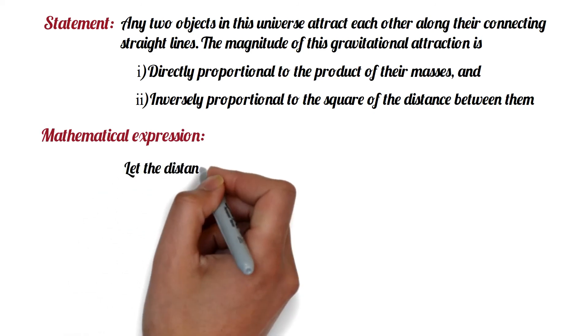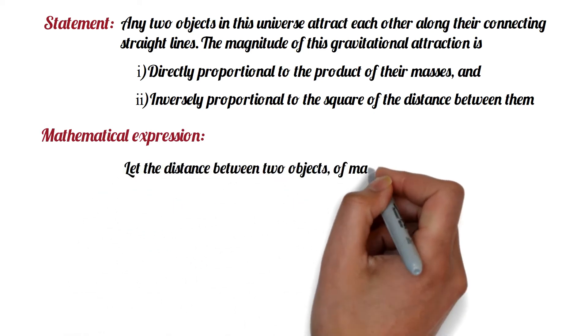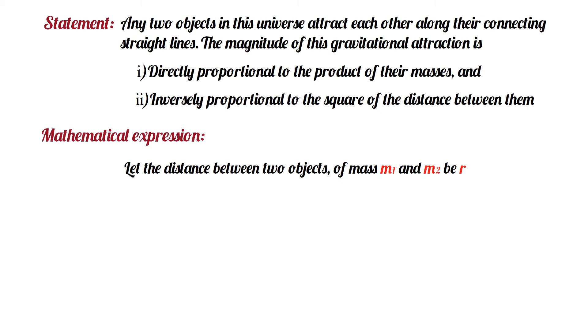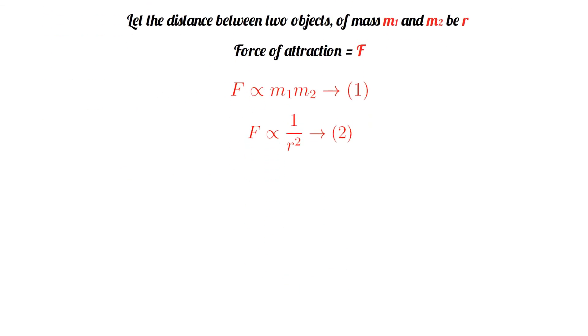Let the distance between two objects of mass M1 and M2 be R. If the force of attraction between the two objects is denoted by F, then according to Newton's Law of Gravitation, F is directly proportional to M1 into M2, and F is inversely proportional to R square. By combining these two formulas we get F is proportional to M1 into M2 divided by R square.